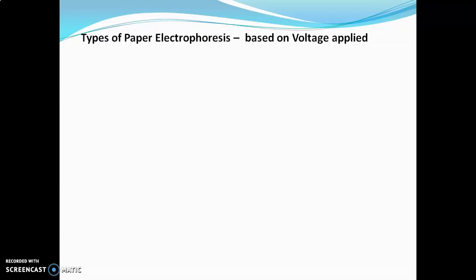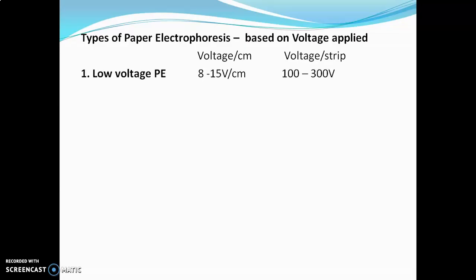There are two types of paper electrophoresis based on voltage applied. The first is low voltage paper electrophoresis, in which the voltage is 8 to 15 volts per centimeter and the overall voltage across electrodes is 100 to 300 volts. The second type is high voltage paper electrophoresis, in which voltage is 50 to 215 volts per centimeter and the overall voltage applied across electrodes is around 10,000 volts. Both these techniques have some advantages and disadvantages.